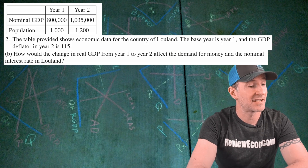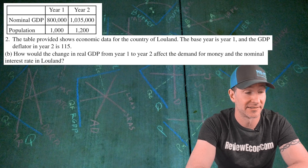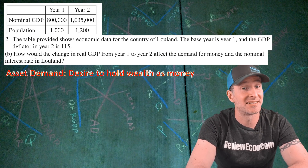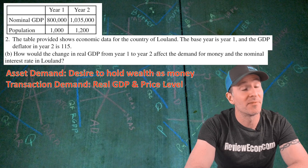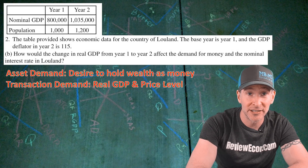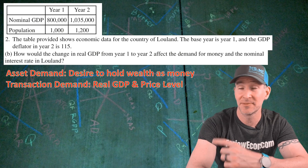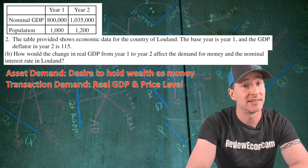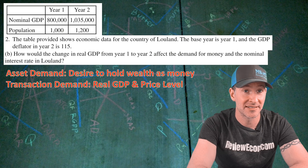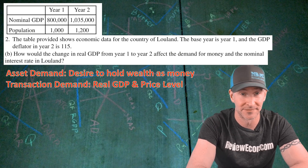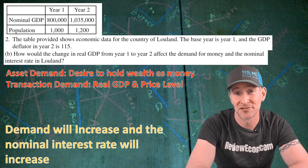For part B, we are asked how the change in real GDP from year one to year two affects the demand for money and the nominal interest rates in Luland. The demand for money has two components: the asset demand for money — the desire to hold your wealth as money — and the transaction demand, which comes from real GDP and the price level. Real GDP increased from 800,000 in year one to 900,000 in year two, so demand in the money market increases, which in turn increases the nominal interest rate. If you had those answers, you get your next point.